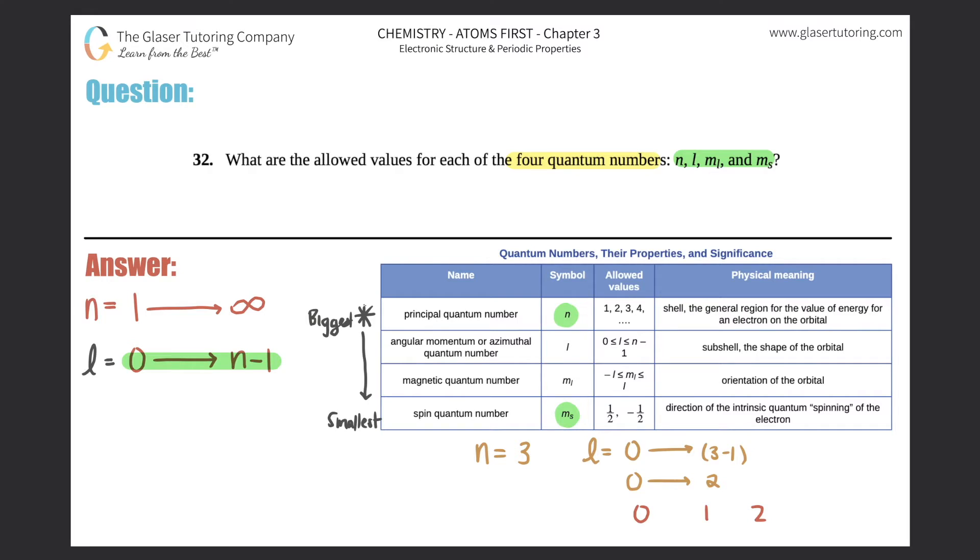Now we're going to find the ml. The ml piggybacks off of what you found out for your l value. This one tells us that an ml value can range from negative l all the way to positive l, but you need to know the l value first. For as many l values that you have, you will be figuring out the ml for each one of them. In the example we've done, I have three l values—zero, one, and two—so technically I would have three different ml values as well.